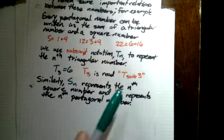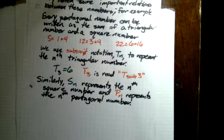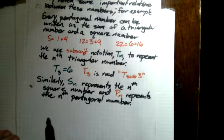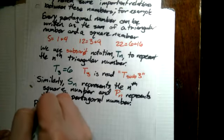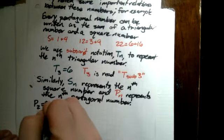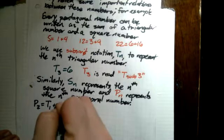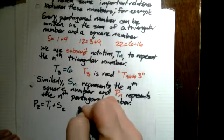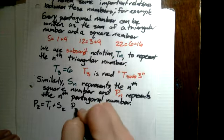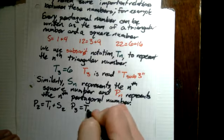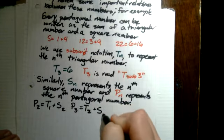Similarly, S sub n represents the nth square number and P sub n represents the nth pentagonal number. And if we take a look at those numbers above, the 5 equals 1 plus 4 and so on and so forth, that means that P sub 2 is equal to T sub 1 plus S sub 2, and 12 is 3 plus 9. That's P sub 3 is equal to T sub 2 plus S sub 3.